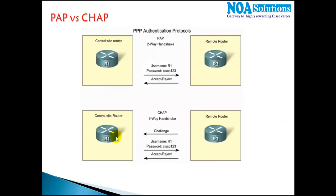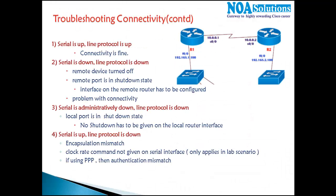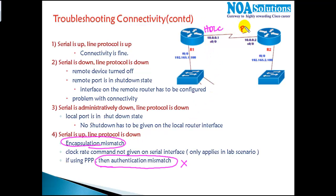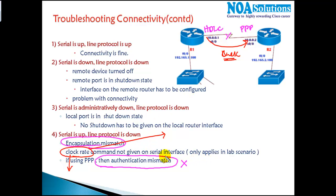Remember: whenever you see an interface as up/down, misconfigured authentication is a common cause. Also, if there's a protocol mismatch — one side running HDLC and the other PPP — the interface will go down. In lab scenarios, if you don't use the clock rate command, that can also cause issues. We use a back-to-back cable between routers in labs and need to manually generate clocking on the serial interface — this applies only in lab environments.